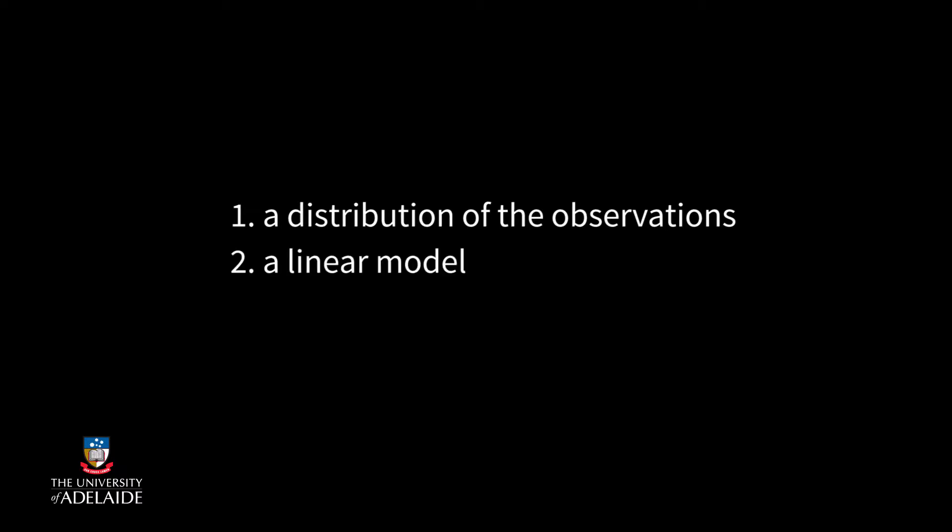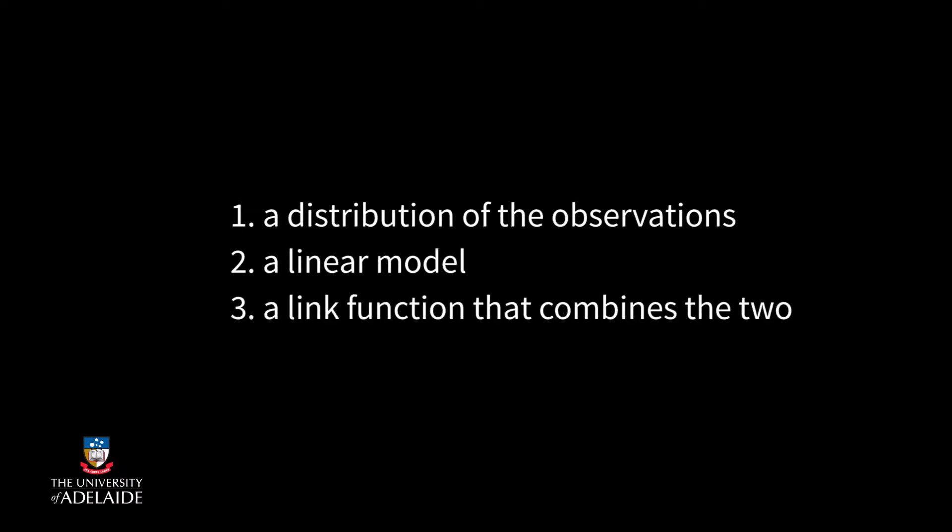The general form of a general linear model consists of three parts: a distribution of the observations, a linear model, and a link function that combines the two.